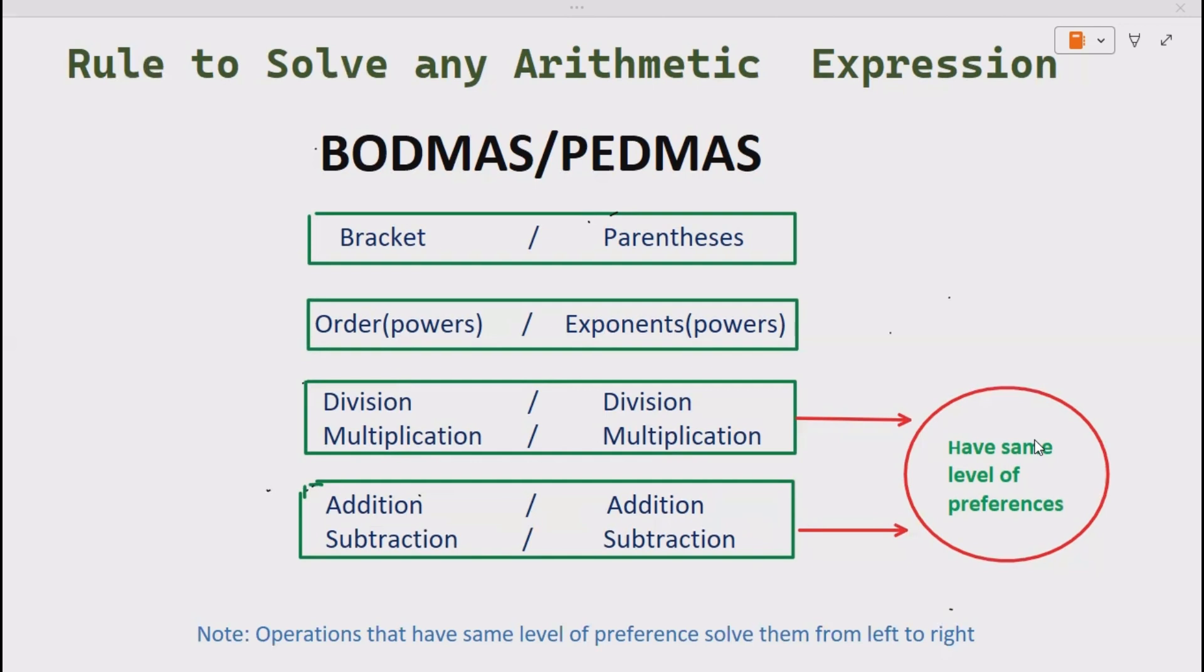Remember, division and multiplication, and addition and subtraction, have the same level of preference. What does it mean? It means whenever you are solving an arithmetic expression and both division and multiplication come in your expression at the same time, you can do the operation first that comes first going from left to right.